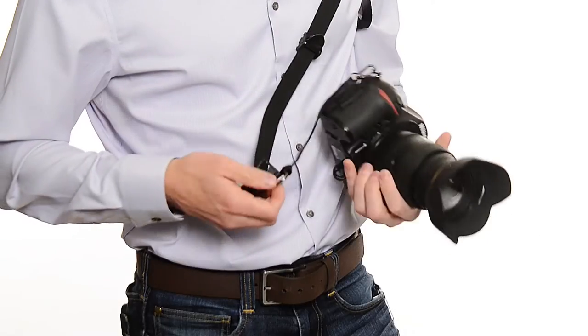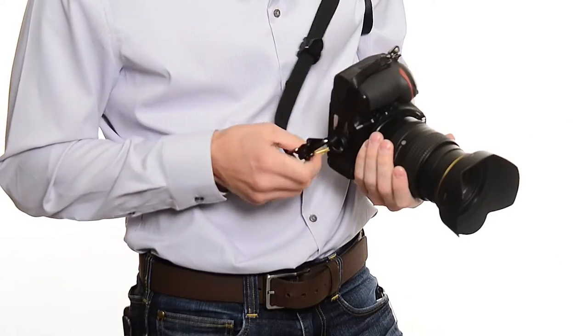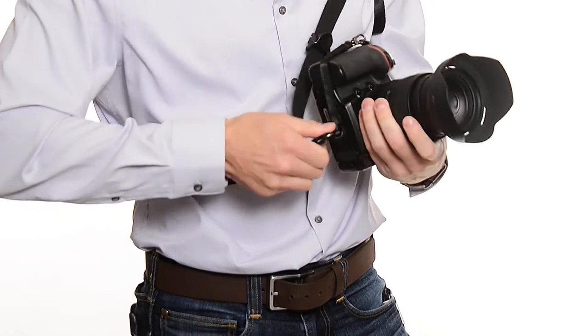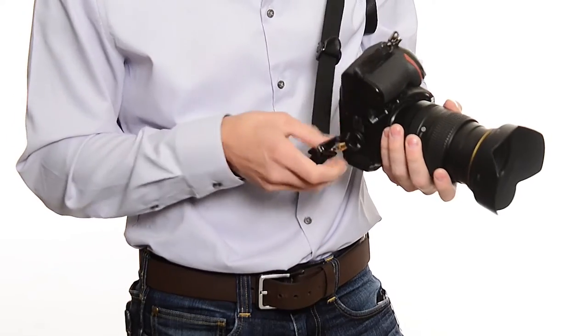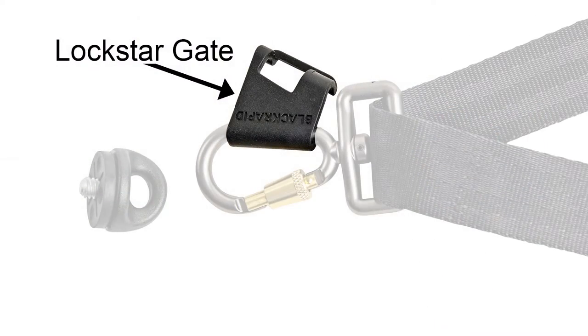At this point, I can then attach the carabiner and tighten it up. My rule of thumb is to always use that carabiner to double-check how tight your fasteners are, close the locking gate, and you're good to go.